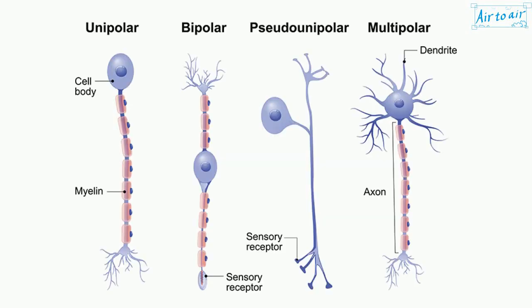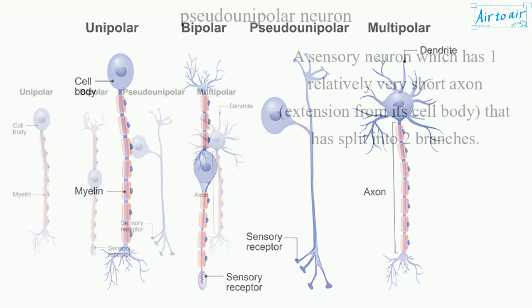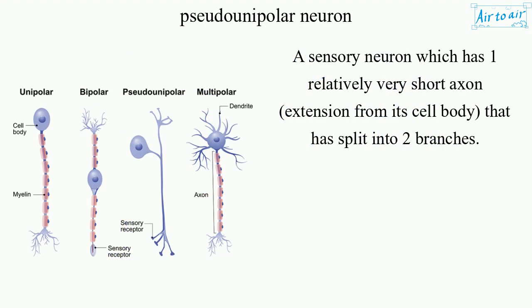Pseudo-Unipolar Neuron. A sensory neuron which has one relatively very short axon, extension from its cell body, that has split into two branches.